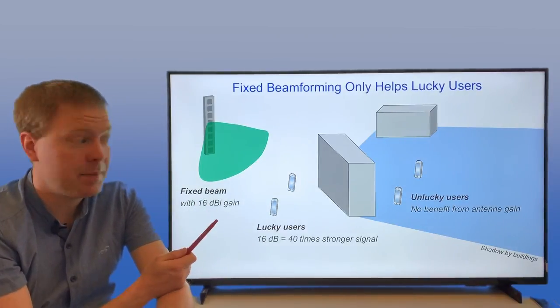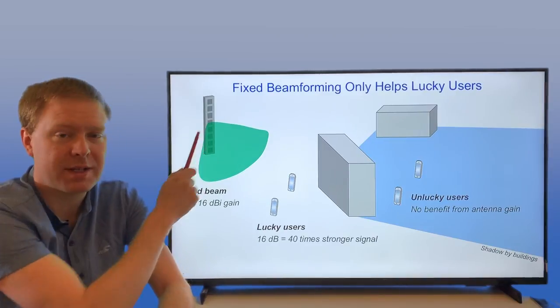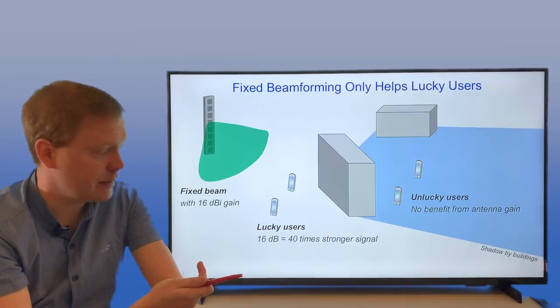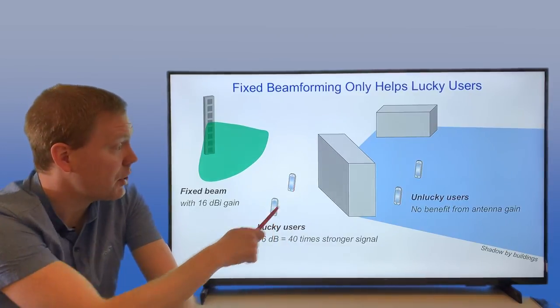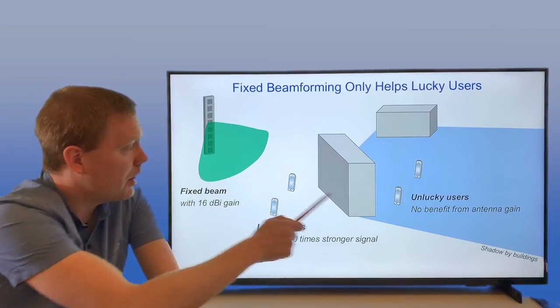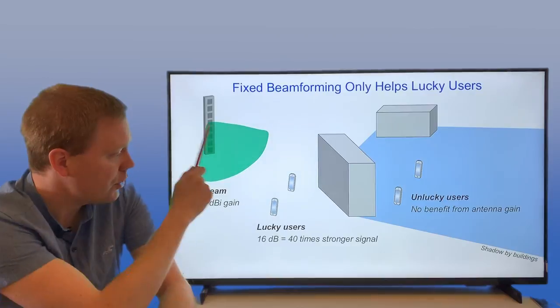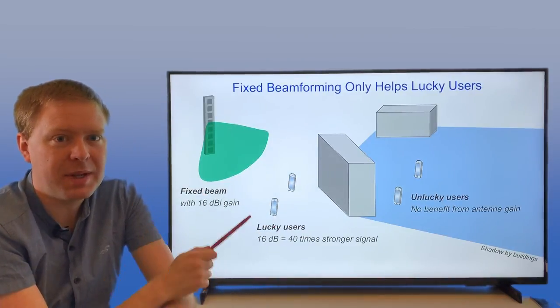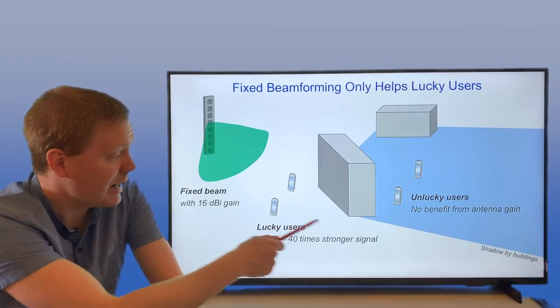It's 16 decibels stronger towards these lucky users as compared to if we have a transmitter here that spreads out the power in all directions in the same way. We get, say, a 40 times stronger signal if you're a lucky user. But if you're an unlucky user that's behind some buildings or not in the direction where you have this fixed beam, you're not getting any benefit from this so-called array or antenna gain.